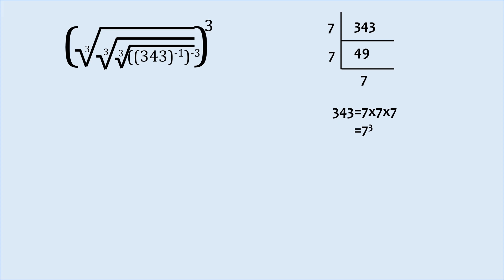So, let's write it as 7 cube. There is a minus 1 power raised to it. We know from the law of indices a to the power m to the power n equals a to the power mn.